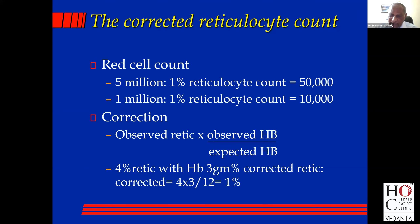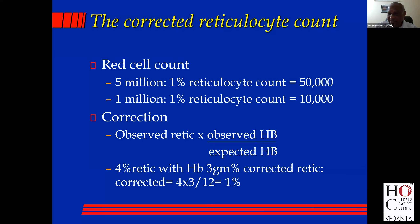Another way is to correct the reticulocyte count. You take what value you've got and multiply it by the observed hemoglobin divided by the expected hemoglobin. So a 4% retic with a hemoglobin of 3 gets corrected: 4 × 3 ÷ 12, which is 1%. This means that for a 3 gram hemoglobin, a 1% retic is low, and it means that the bone marrow is not responding appropriately to the anemia.